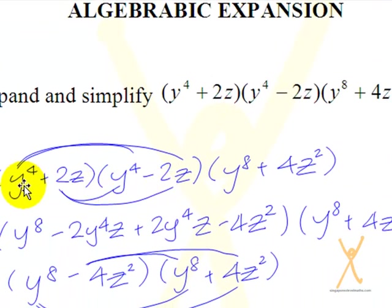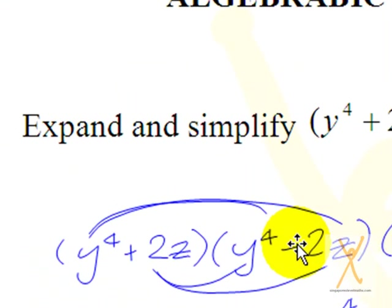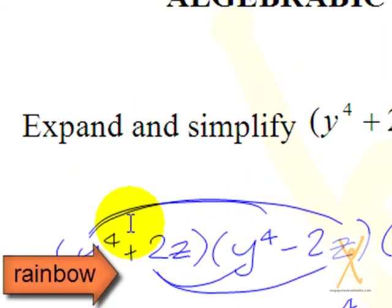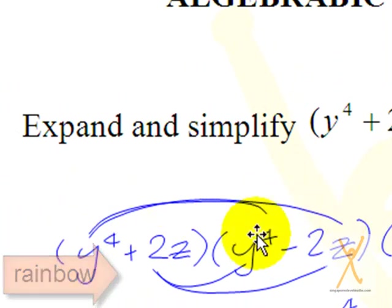Okay, what this student did was that he focused on the first two brackets and made use of rainbows. Now, the lines that you see here drawn over here are what I call rainbows.